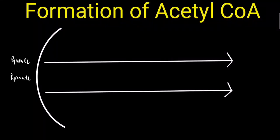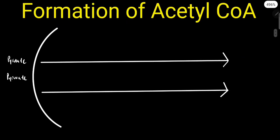Welcome back to another Lessons Learned video. Today we're going to be talking about the formation of acetyl-CoA, which is the second step of cellular respiration. Two key details about this stage are: one, it occurs in the mitochondrial matrix, and two, this process is aerobic, meaning oxygen is present.